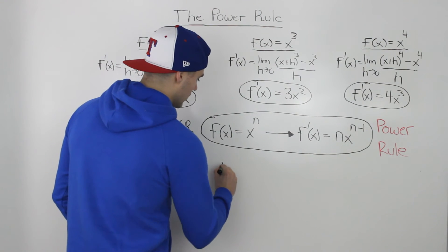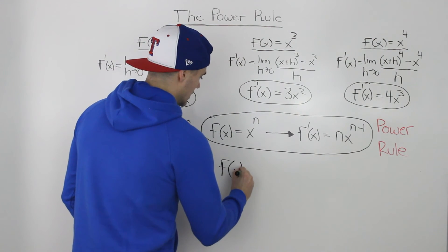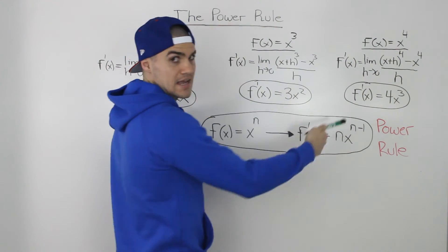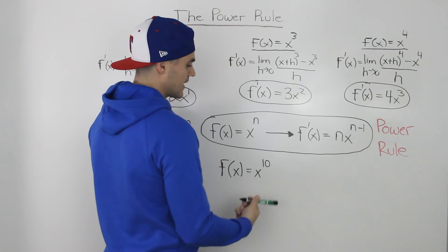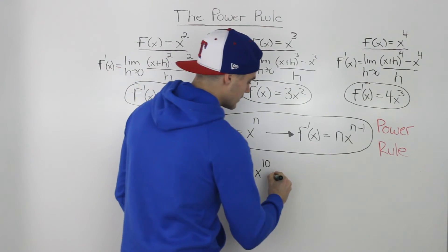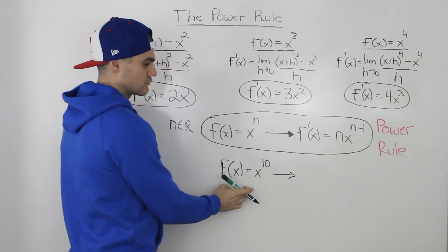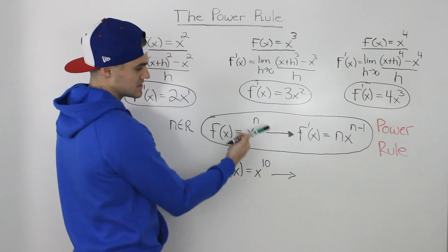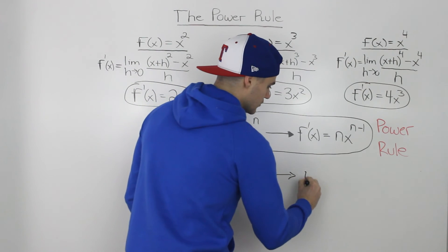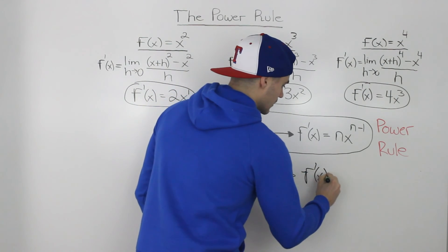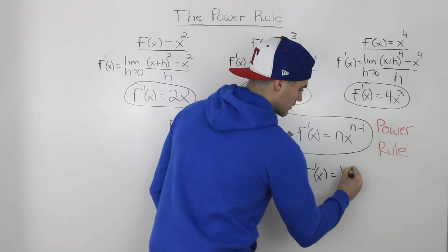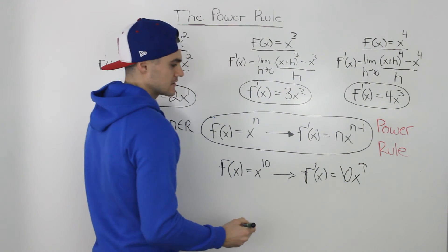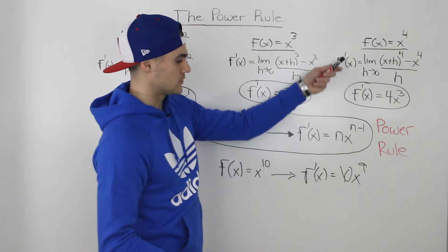x⁴ is not too bad, but what if we have a function like x to the power of 10? We're obviously not going to do all that algebra — expanding (x+h)¹⁰ would be crazy — but we can find the derivative really quickly using the power rule. Since n = 10, we bring the 10 down and subtract 1 from the exponent, and we get 10x⁹ right away.